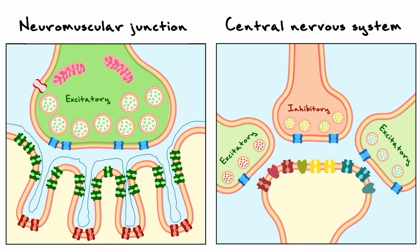Another very important distinction between the two systems is that action potentials in the neuromuscular junction will usually produce an action potential in the muscle fiber. The threshold for action potential in the muscle fiber is rather low, so the effects of acetylcholine are very strong. In the central nervous system, the presynaptic inputs are generally weak, such that it takes many excitatory inputs to generate an action potential in the postsynaptic cell. Also, given the addition of inhibitory inputs on the postsynaptic cell, it adds an additional layer of integration that we will have to consider.